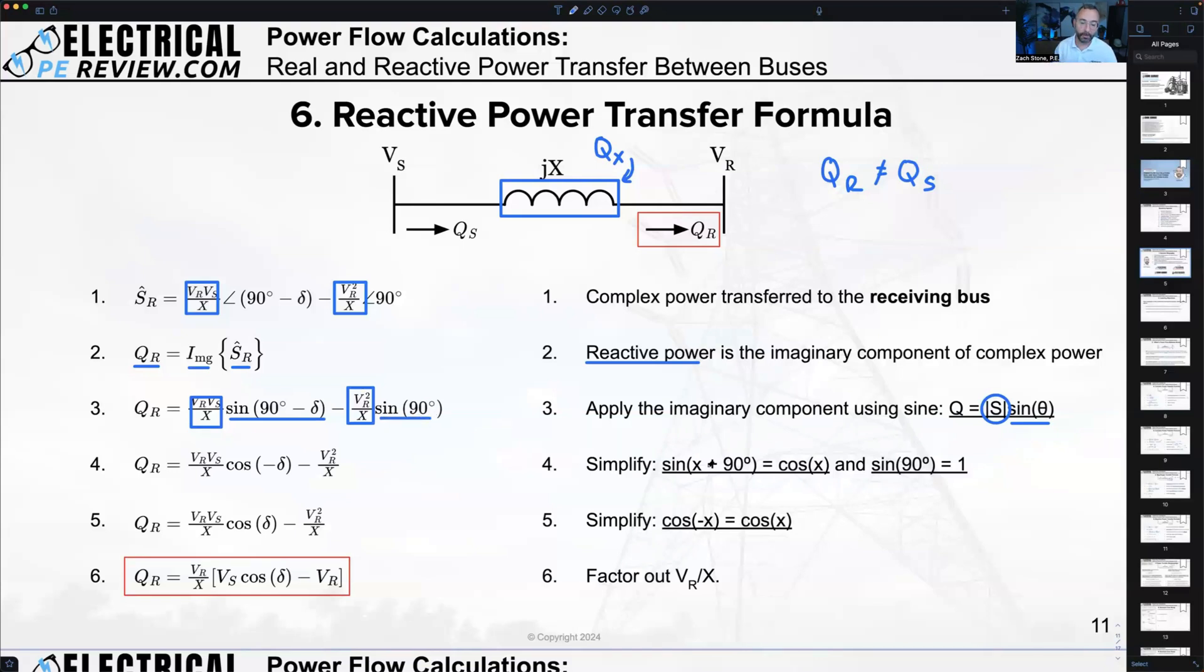Two quick trig identities are going to help us simplify this. The sine of 90 degrees plus a variable is the same thing as the cosine of that variable. The sine of a variable plus 90 degrees is the same thing as the cosine of that variable. Again, here the variable is negative, it's negative delta. Last, what's the sine of 90? If you're not sure, you can use your calculator. Sine of 90 is just one. So sine of 90, this term cancels to one. One times anything is still just that magnitude. We're on step four. We've got one more trig identity. The cosine of any negative number is the same as the cosine of that number positive. In other words, cosine of negative delta is the same thing as just cosine delta. We can just ignore that negative sign.